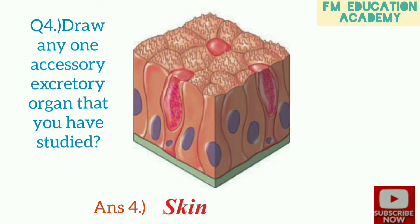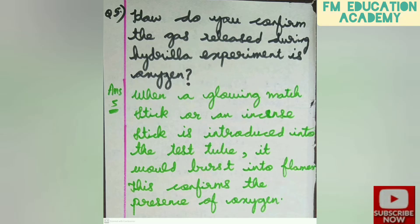Fourth question: draw any one accessory excretory organ. Accessory excretory organs are skin, liver, lungs, etc. Here I will draw the skin as it is very easy. No need to label in this question because it is only two marks — just draw it.